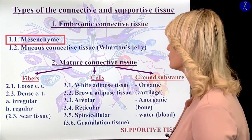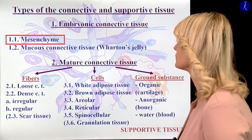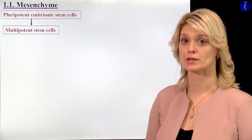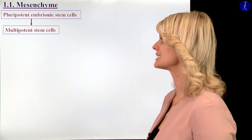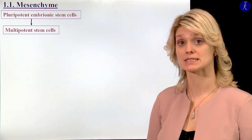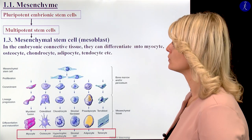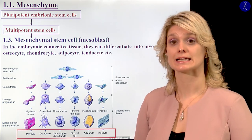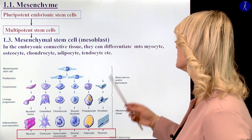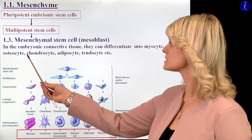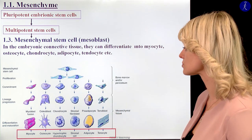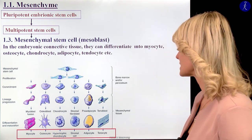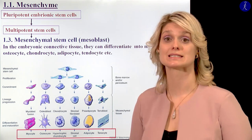Let's see now the first type within the embryonic connective tissue group: the mesenchyme. In the last lecture I mentioned that we have a lot of embryonic stem cells, multipotent stem cells during development. We can talk about mesenchymal stem cells, or mesoblasts. From these stem cells, different cell types can develop — for example, myocytes, osteocytes, chondrocytes, adipocytes, tendocytes. Here you can see a picture which shows all the different cell types that can differentiate from mesenchymal stem cells.